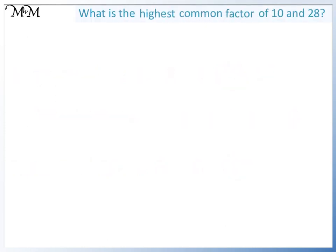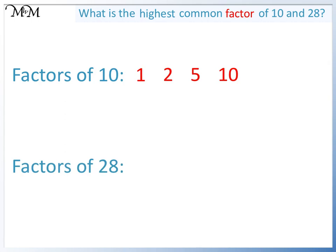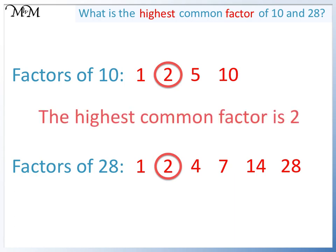What is the highest common factor of 10 and 28? First, we list the factors of 10 and 28. The factors of 28 are 1 times 28, 2 times 14, and 4 times 7. We now look for the highest number in both lists. 2 is the largest number that is in both lists. So 2 is the highest common factor.